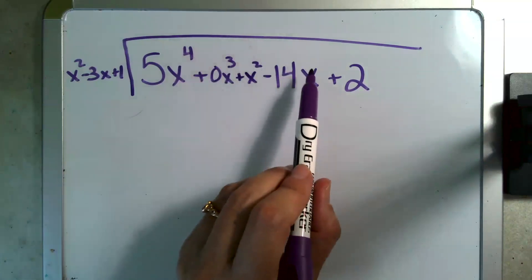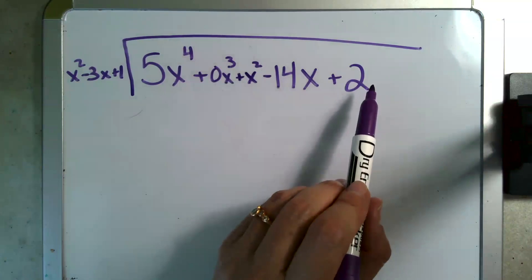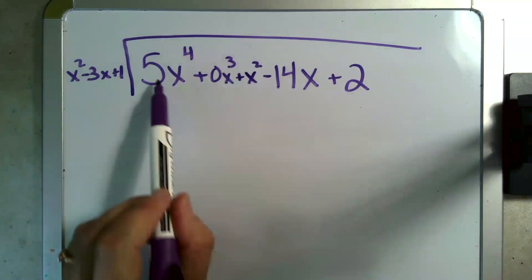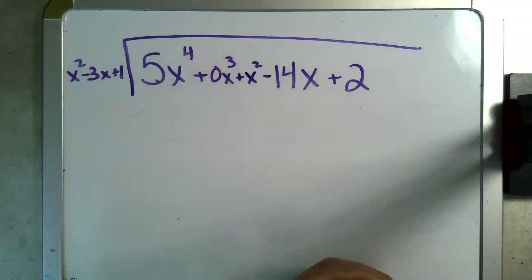So there's my x squared. Now I have my x to the first and this is my x to the zero essentially. So now I have a representative for all of them. Here's how polynomial long division goes.